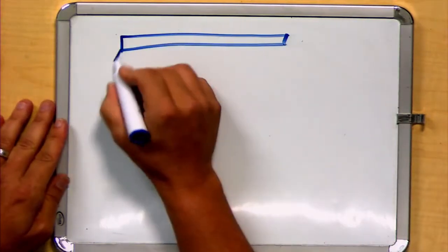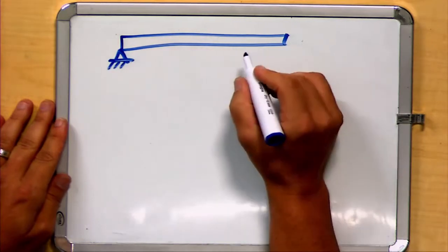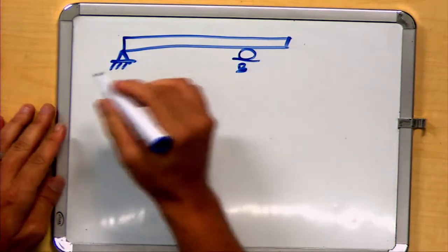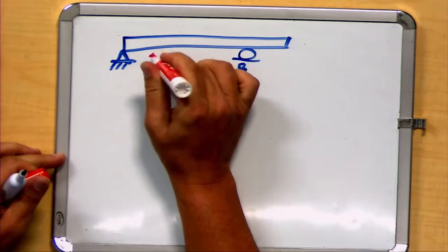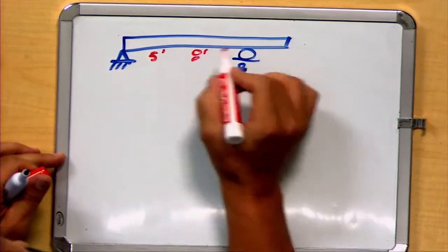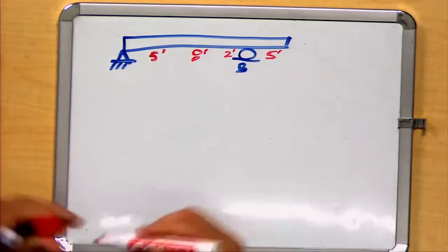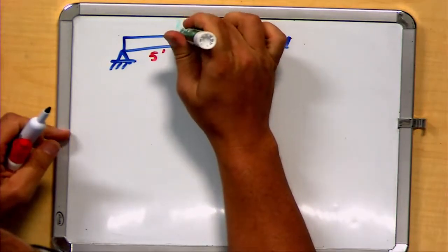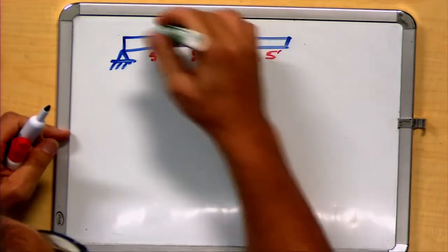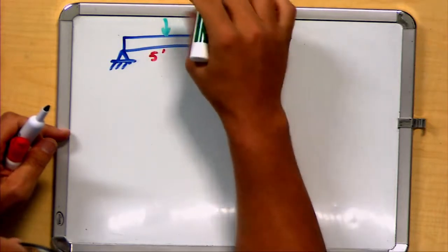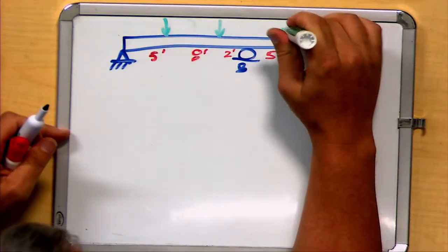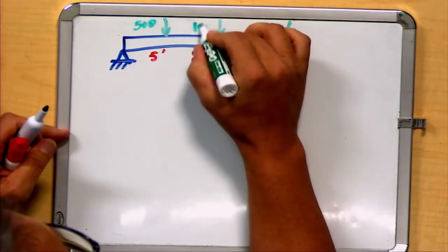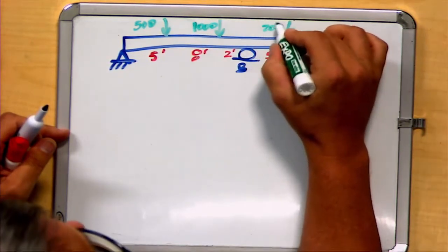Here I have a beam. It's supported here with a pin support at point A. We'll give it a roller support at point B. We'll have some distances along here: five feet, eight feet, two feet, and five feet. And those will distinguish between some loading, again a relatively complex loading, of this beam. And the loads are going to be 500 pounds, 1,000 pounds, and 200 pounds on the cantilevered end.